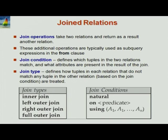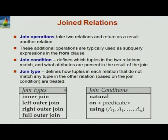The join types are: inner join (regular), left outer join, right outer join, and full outer join. The join conditions are: natural join (matches all columns with the same name and removes duplicate columns); on predicate (applies a condition and allows through matching rows); and using a list of attributes (same as natural join but only on the specified attributes, leaving other attributes as-is).